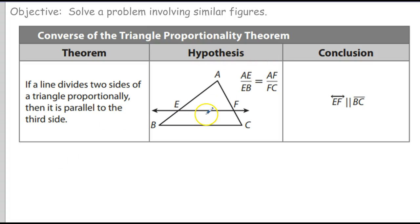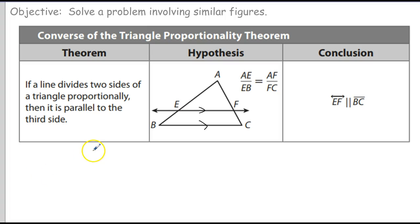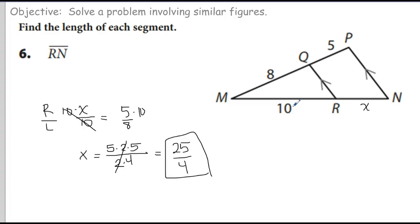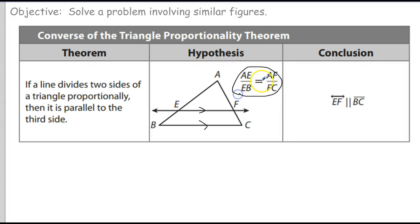Now, the converse proportionality theorem. A few minutes ago we said if two lines are parallel, we get the proportion AE to EB equals AF to FC. This is a bidirectional relationship. So if you can show that AE to EB is the same ratio as AF to FC, then that proves those two lines are parallel. On the original theorem the hypothesis is the lines are parallel and the conclusion is the proportion. On the converse, the hypothesis is the proportion and the conclusion is the lines must be parallel.